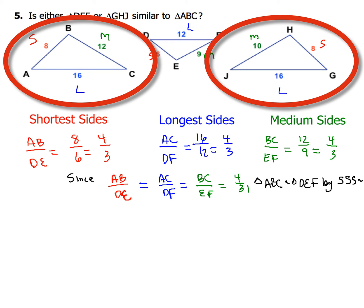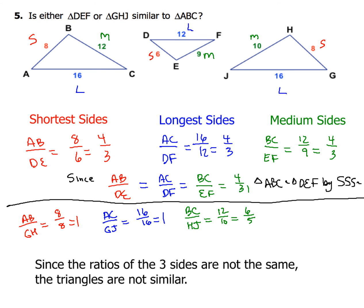Hopefully you got AB/GH = 8/8 = 1, and AC/GJ = 16/16 = 1. However, BC/HJ simplifies only to 6/5. Since the ratios of the three sides are not all the same, the triangles are not similar.